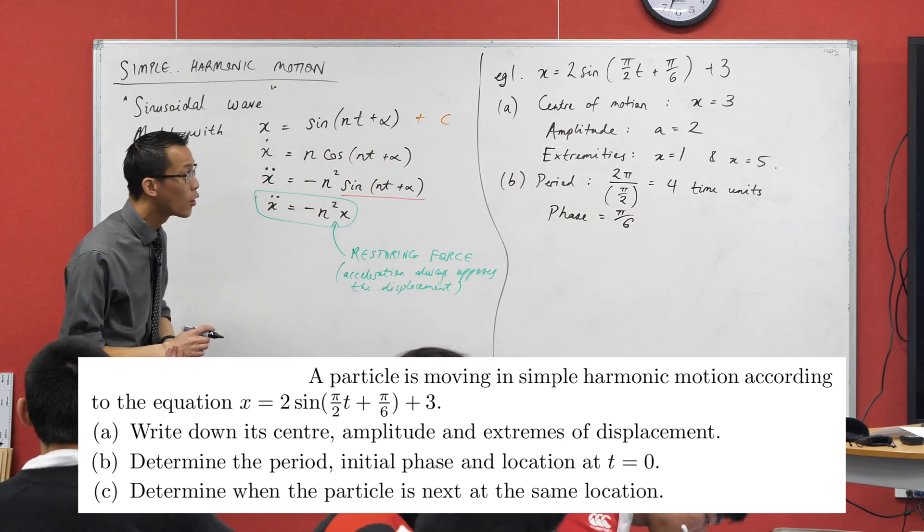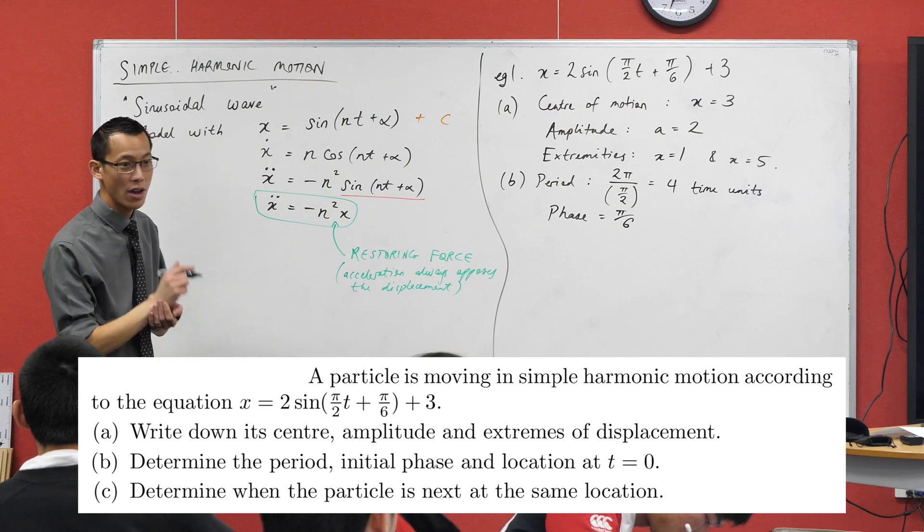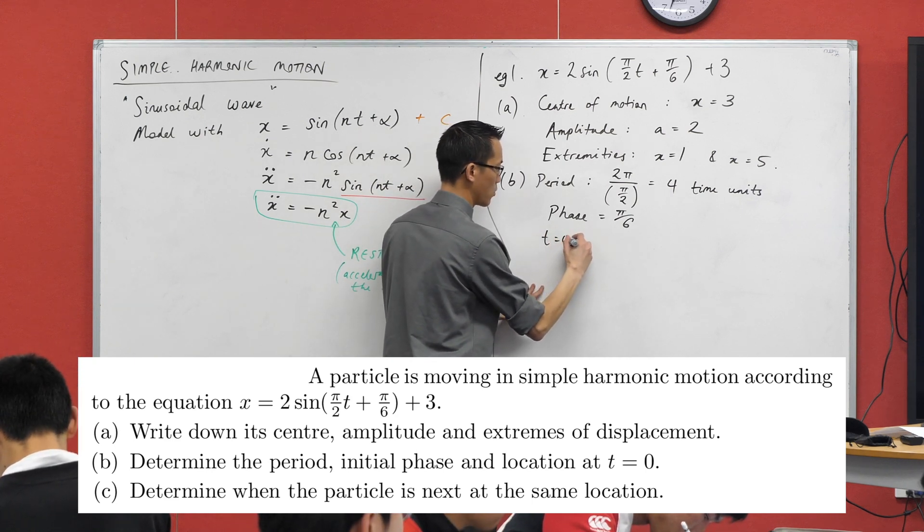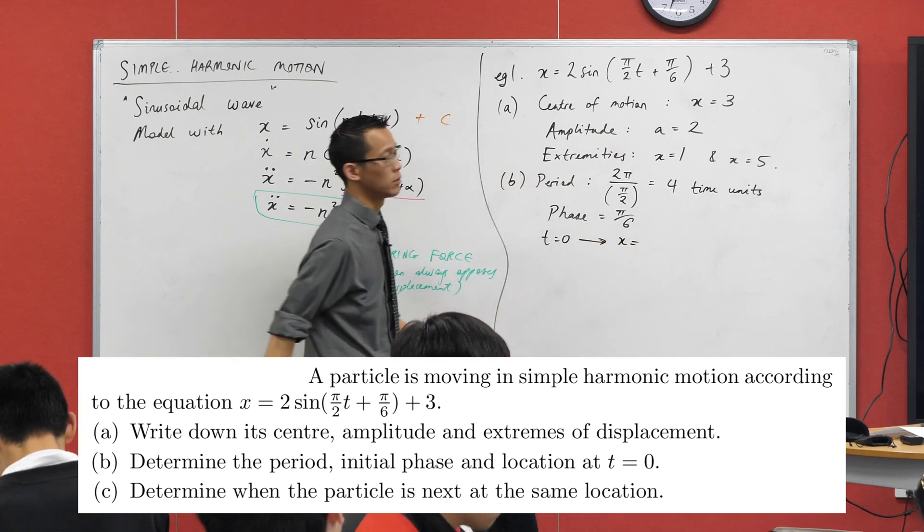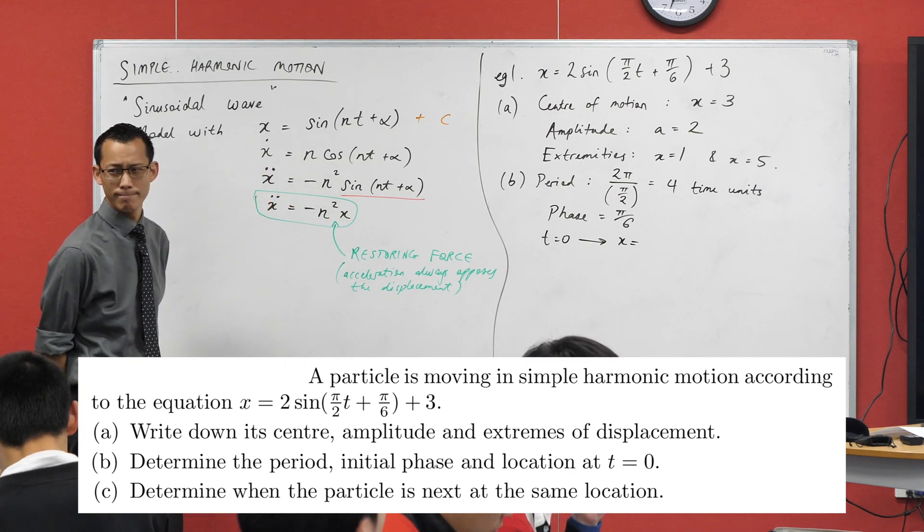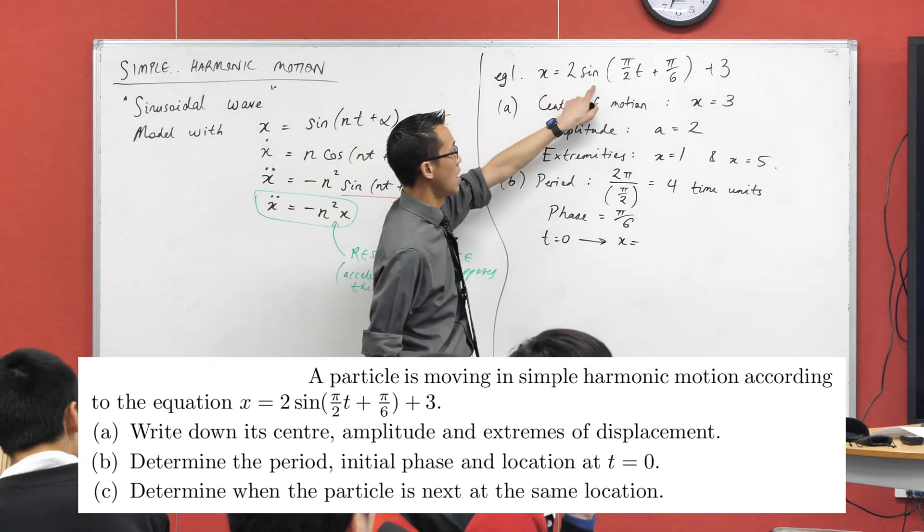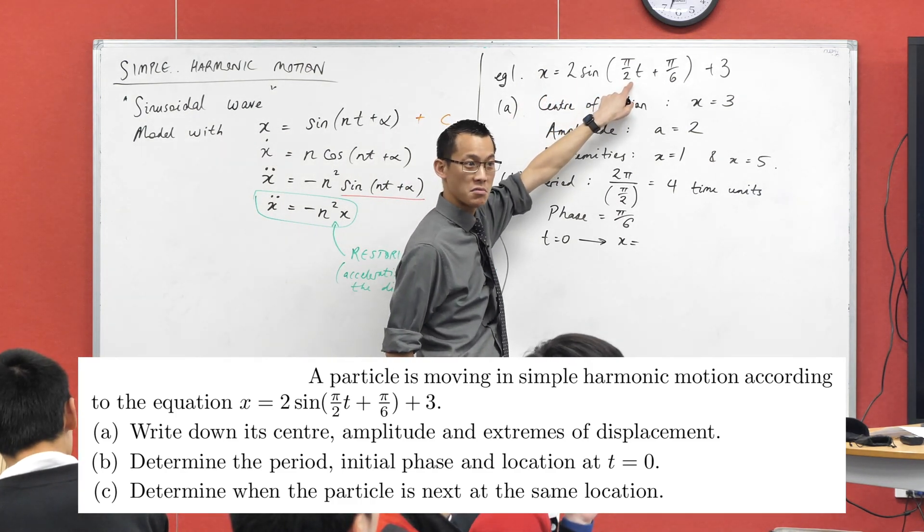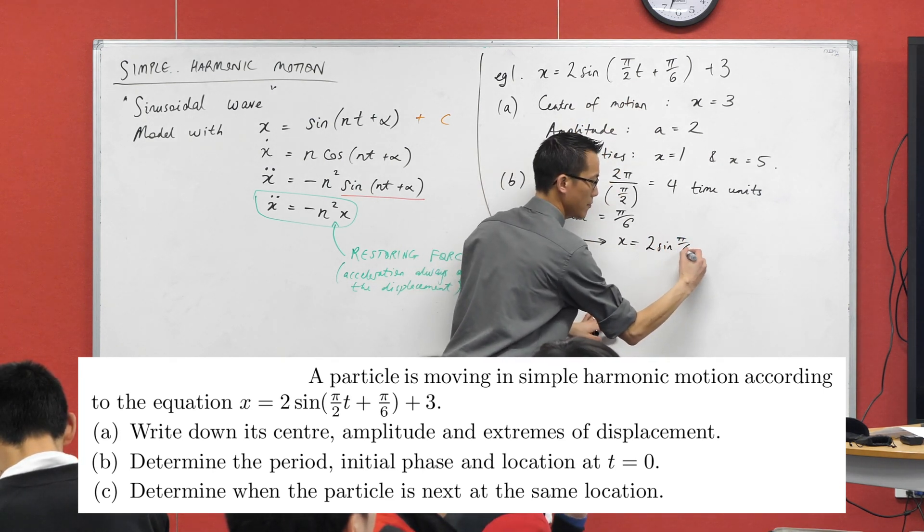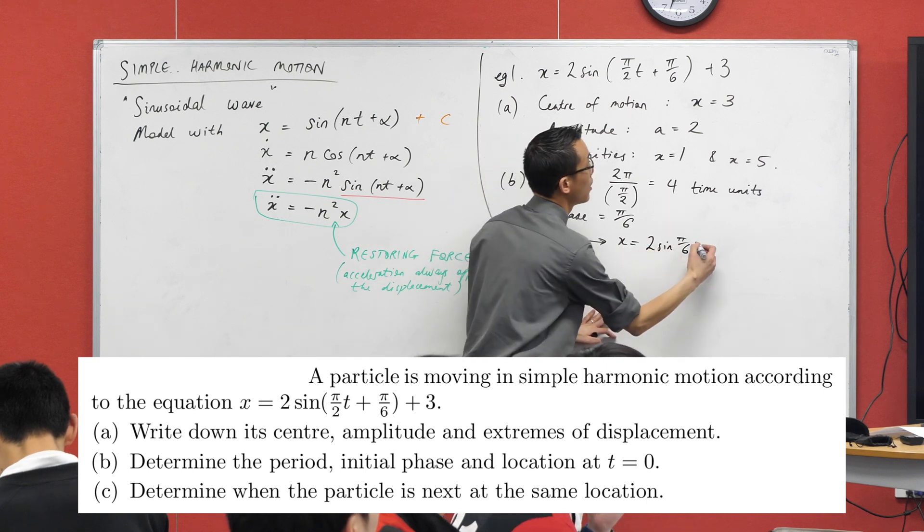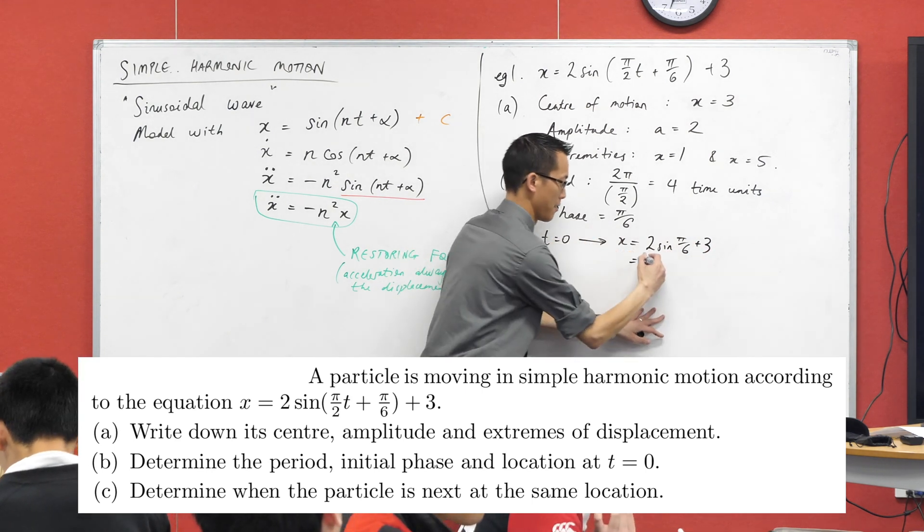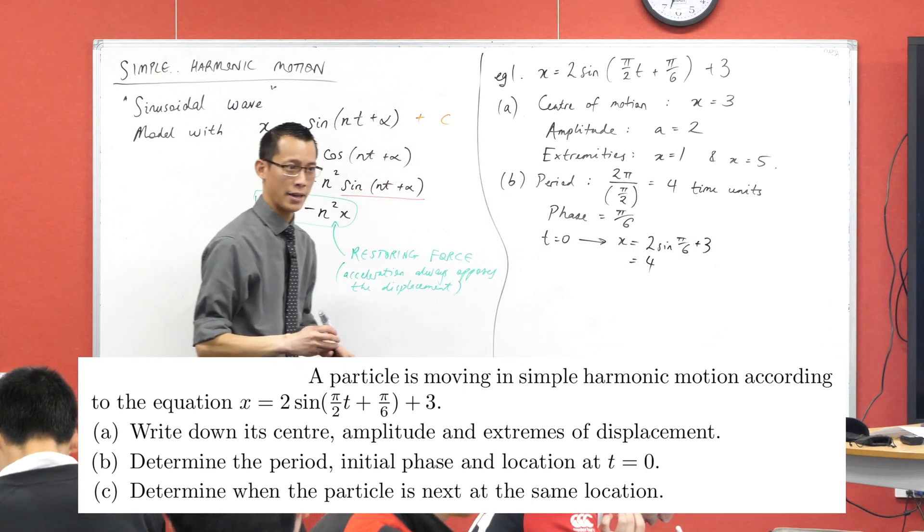Okay, last piece. I think we've got all of the bits now to be able to say when time equals 0 initially, time equals 0 implies x equals, what are you going to get? 2 sine, this is 0, so it's really sine of π on 6. What's π on 6? Sine of π on 6? That's a half, right? Plus 3, so I'm really getting 2 times a half plus 3. That looks like 4 to me. Are you okay with that?